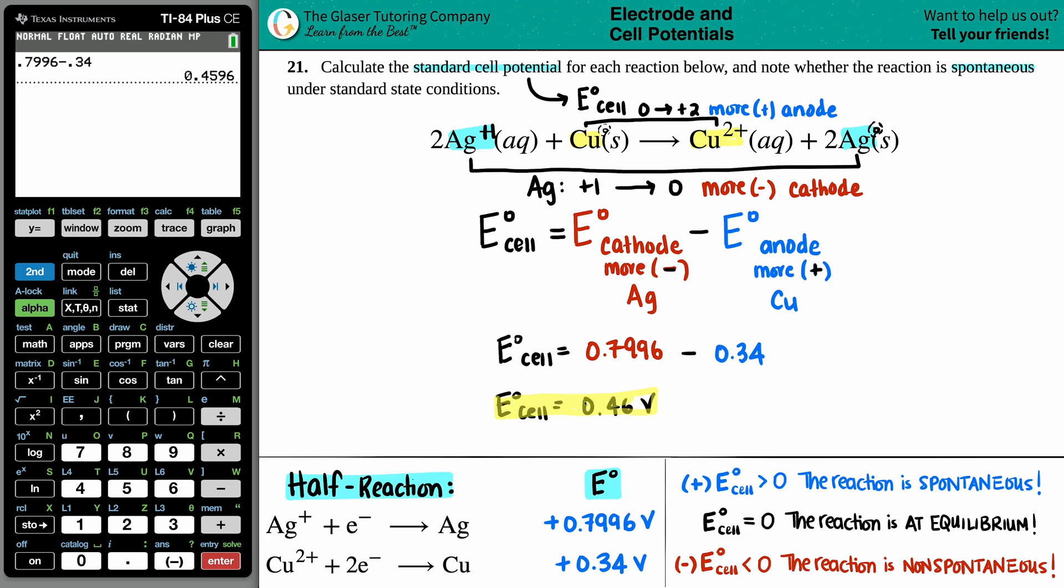How easy was that? Now you just have to tell me, or I'm going to tell you. We'll do it together. Is this spontaneous or not? Well, that goes by what the sign of the E cell is. If you have a positive E cell, an E cell greater than zero, the reaction is spontaneous. If it's a negative, that's non-spontaneous.